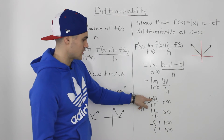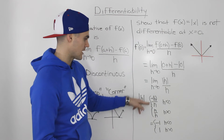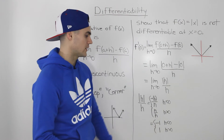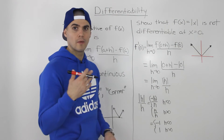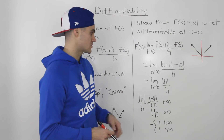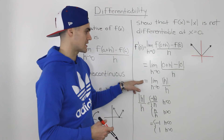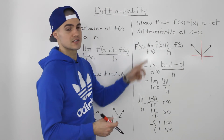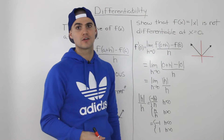The absolute value of h turns into a piecewise function: negative h when h is less than 0, and positive h when h is greater than 0. If you don't remember how to do this, I'd highly recommend going back to the section on one-sided limits. It's very likely to come up on your test when showing that a function is not differentiable at a certain x value, especially when dealing with an absolute value function.